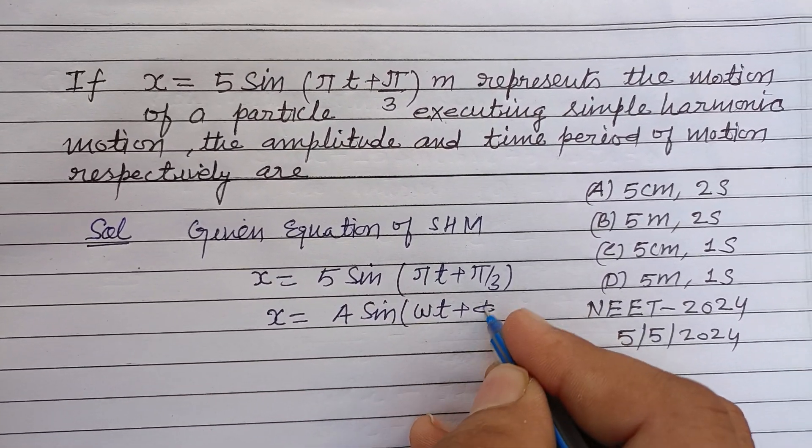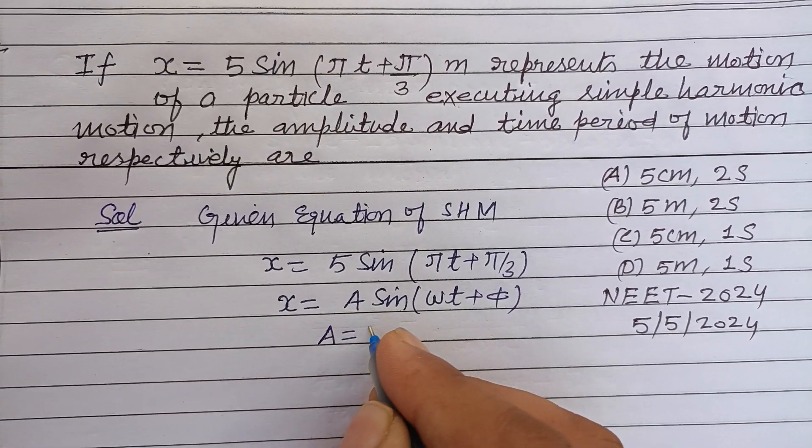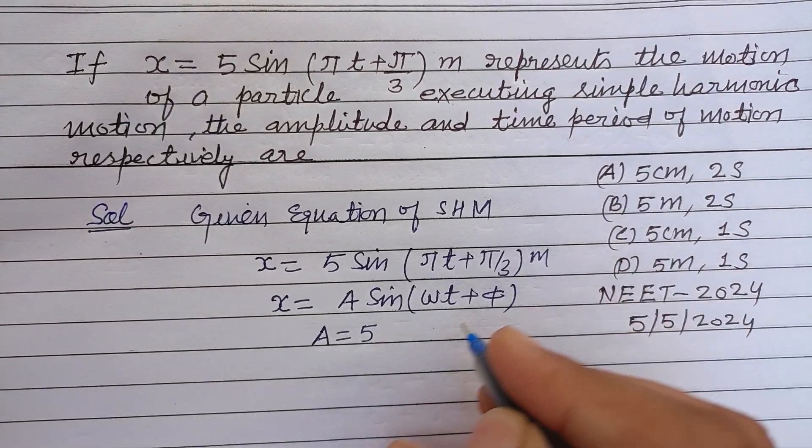Comparing this, A equals 5. This is given in meters, so this is 5 meters.